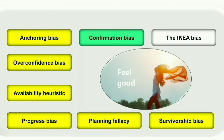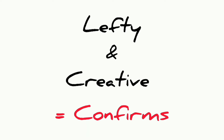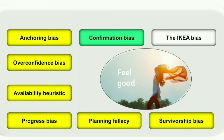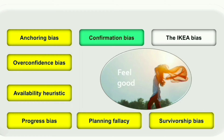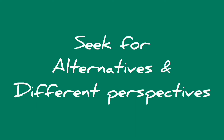For example, if we think left-handed people are more creative and intelligent than right-handed people, and we see someone who is both left-handed and creative, that confirms our belief. Even if we see right-handed creative people, we tend not to pay attention to that. The way to control confirmation bias is to seek different opinions, and if you instinctively feel you already believe something, pause and seek various alternative decisions.